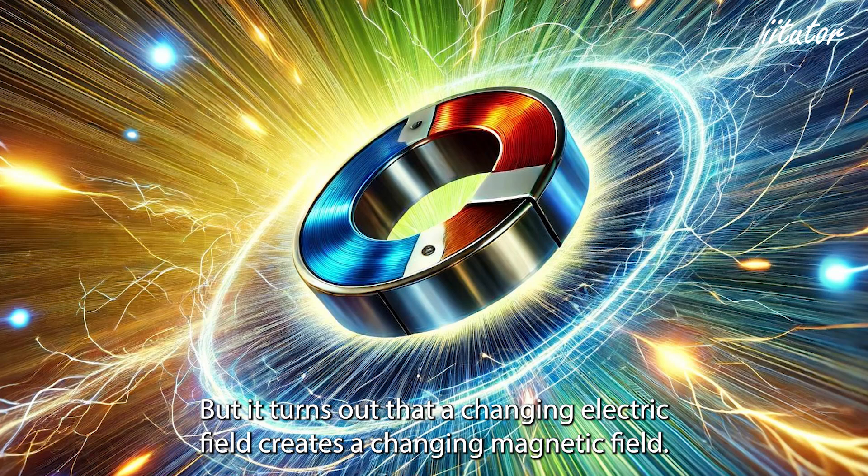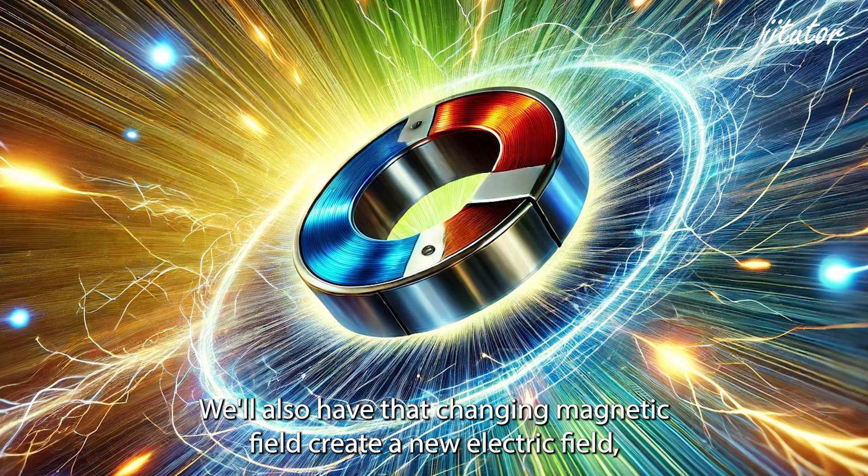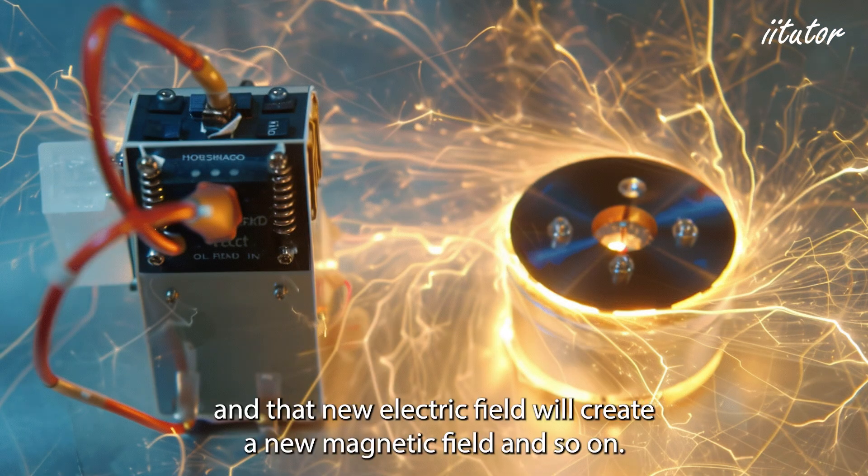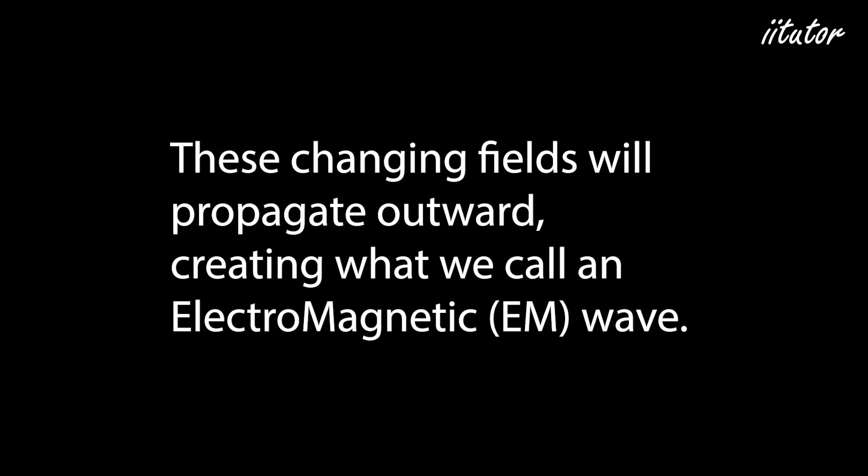But it turns out that a changing electric field that creates a changing magnetic field will also have that changing magnetic field create a new electric field. And that new electric field will create a new magnetic field and so on. This whole series of electric fields and magnetic fields will propagate outward very quickly in a wave. And this is what we call an electromagnetic wave.